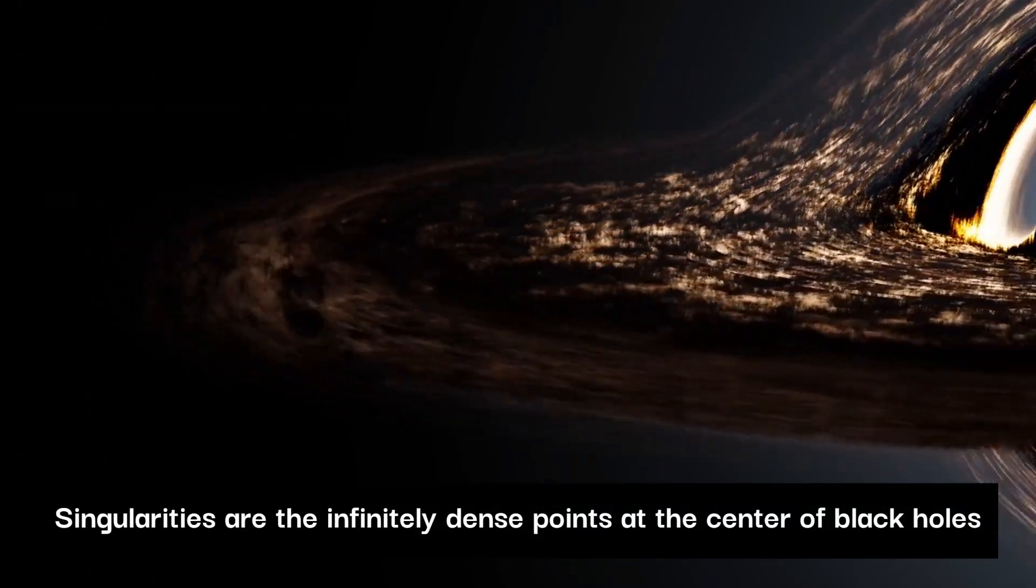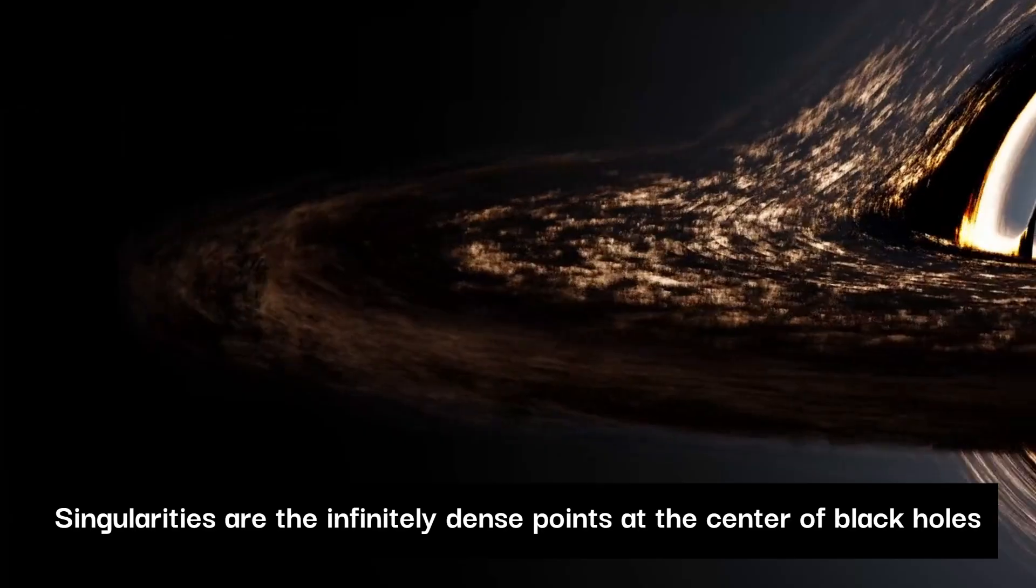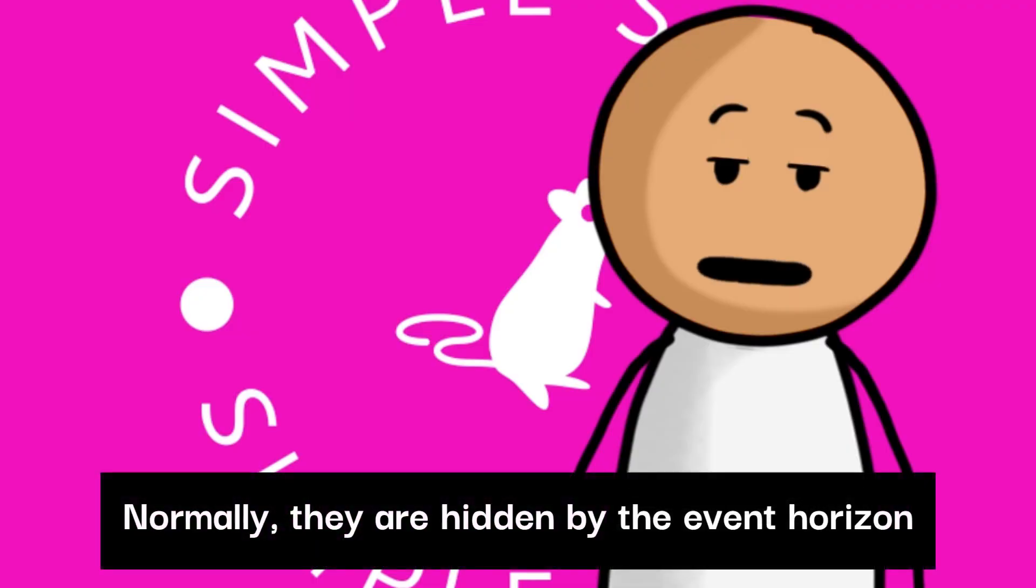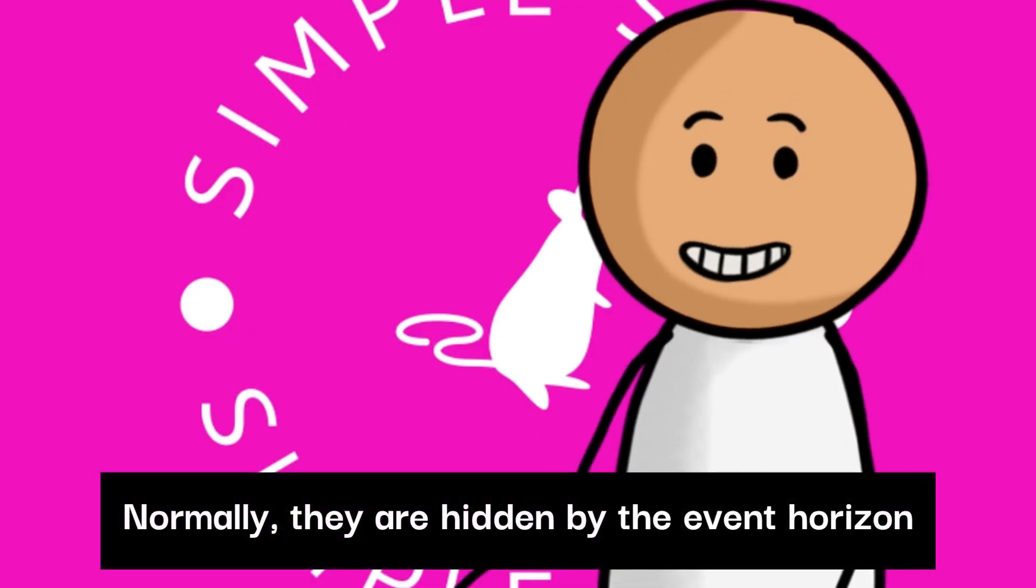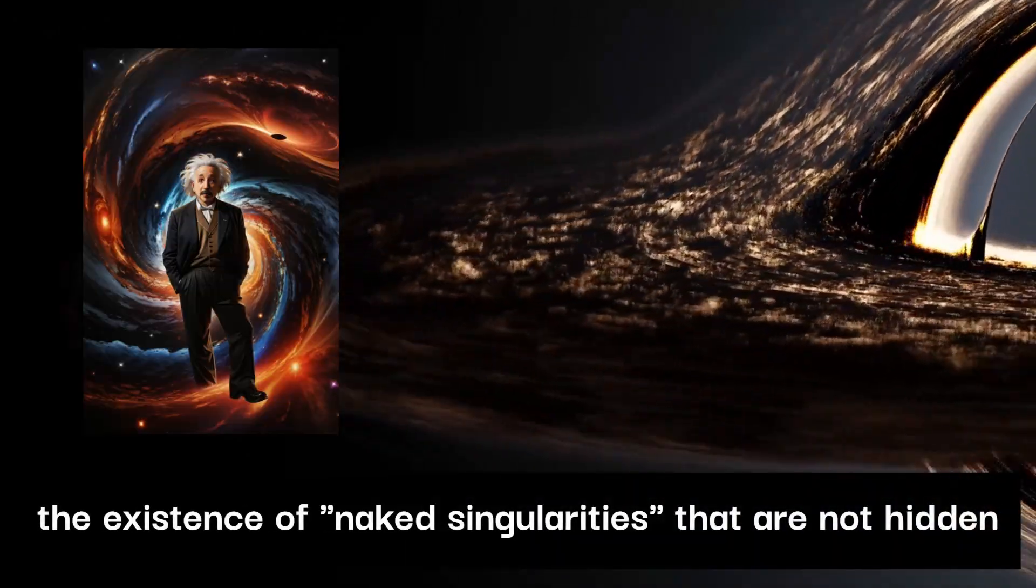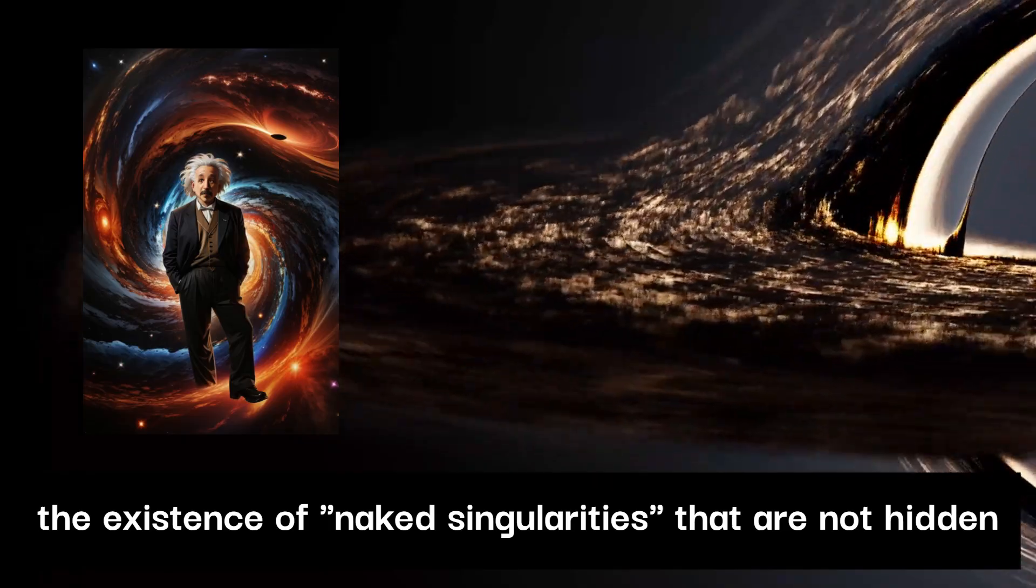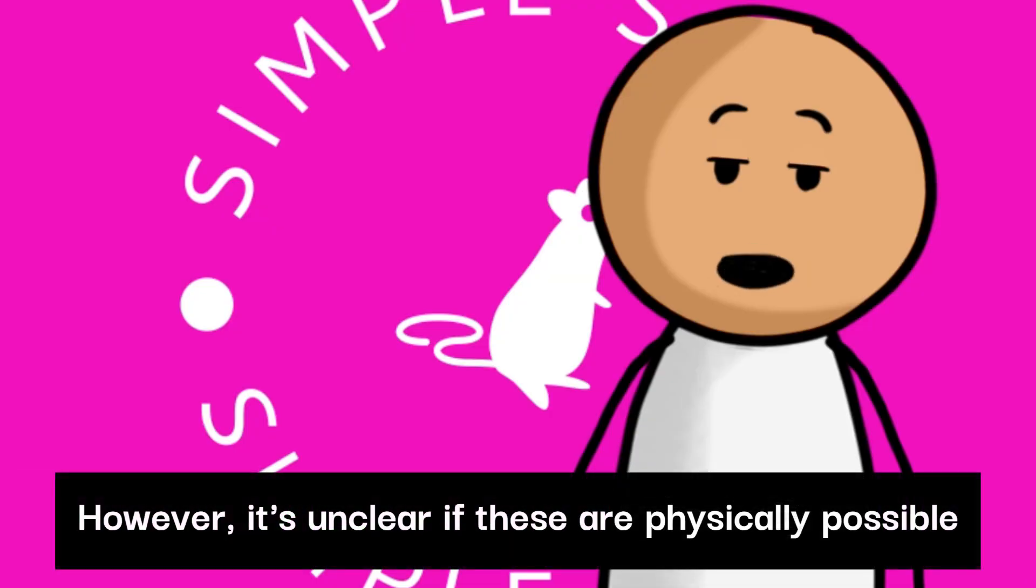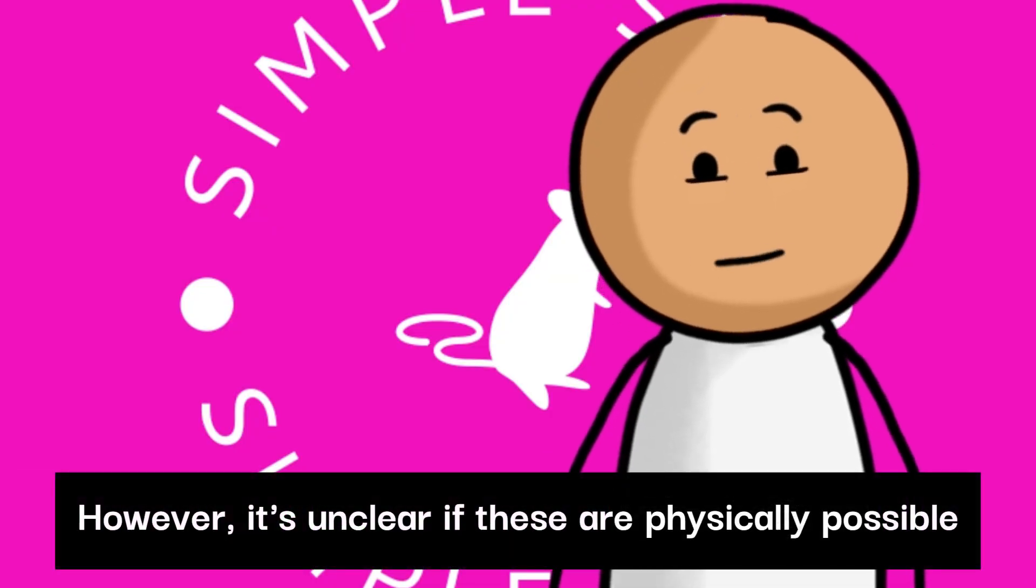Singularities are the infinitely dense points at the center of black holes. Normally, they are hidden by the event horizon, but some mathematical solutions to Einstein's equations suggest the existence of naked singularities that are not hidden. However, it's unclear if these are physically possible.